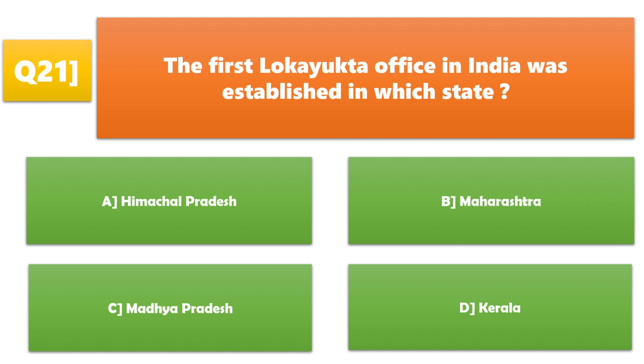The first Lokayukta office in India was established in which state? A. Himachal Pradesh, B. Maharashtra, C. Madhya Pradesh, D. Kerala. B. Maharashtra is the correct answer.